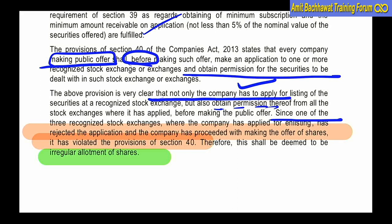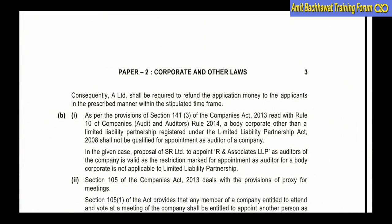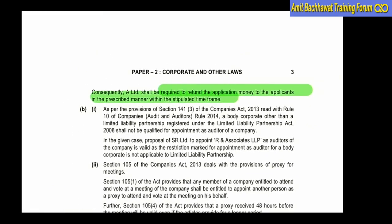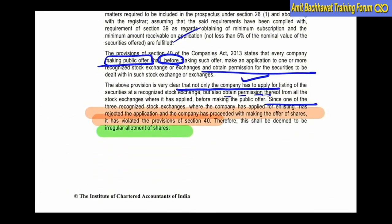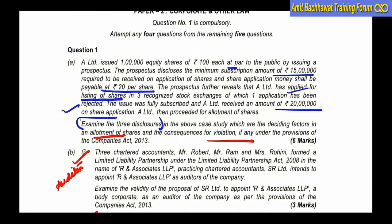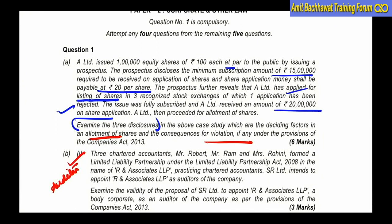This is a pure case of irregular allotment - a violation of Section 40. In such a situation, you have to refund the application money within the prescribed time. This was a tricky question because people usually don't get such questions and they neglect Section 39-40. But in real life, this is a very important section. What are the consequences of such a violation?